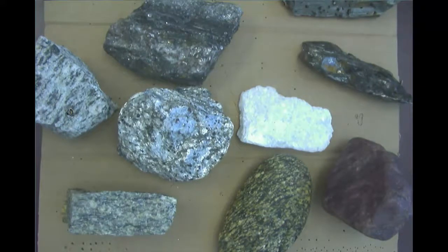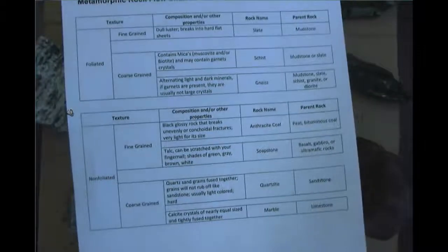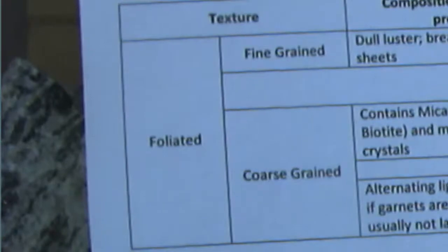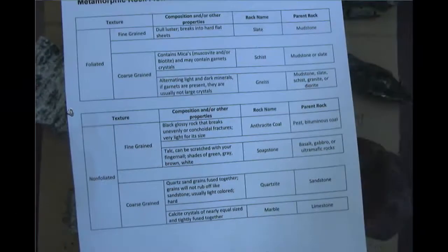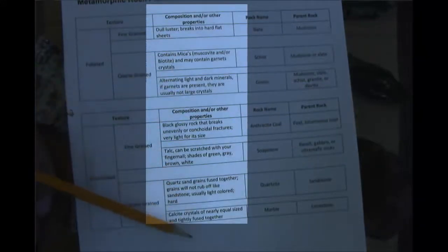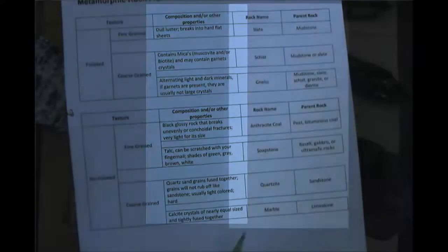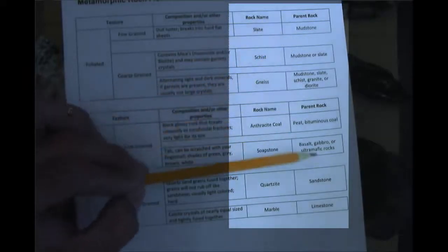The main things you'll use to identify metamorphic rocks are those textures and compositions, but this flowchart is exceptionally helpful. Right away you can see two main groups: foliated texture and non-foliated. That splits things up quite easily, and then it gets into fine grain, coarse grain, glassy or not, as well as composition and other properties — whether it breaks up easily, contains micas or garnets, hardness, whether it has calcite — and then it gives you the rock name and possible parent rock.